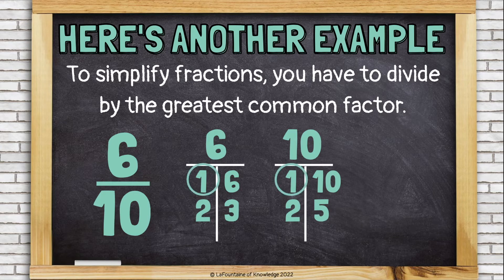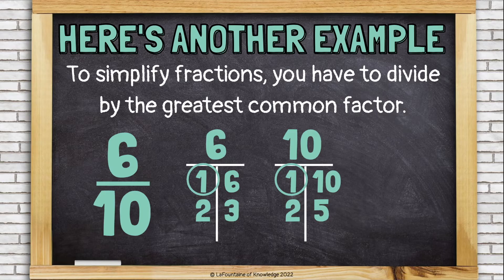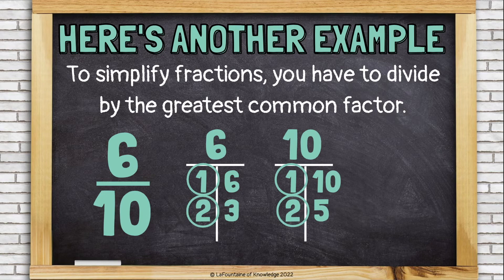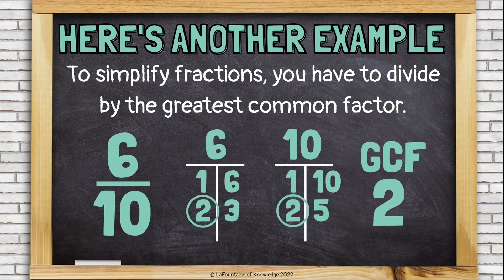All right. Now, let's look at the common factors. They both have one. They both have two. And that's all they have in common. Which one is the greatest common factor, the biggest, that they both have on their T chart? It's two. Two is the GCF, the greatest common factor.